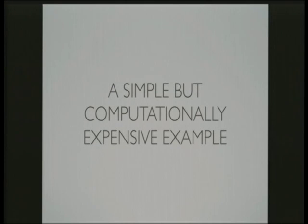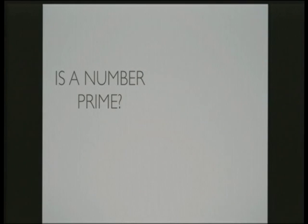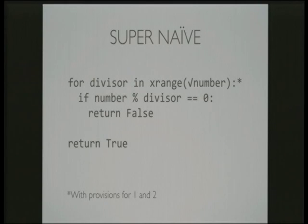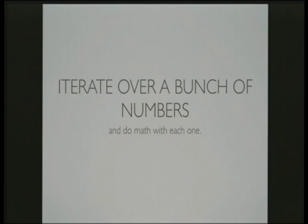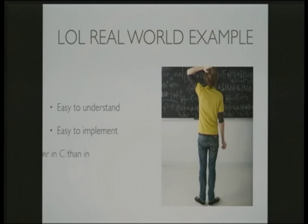For the demo I needed a simple but computationally expensive example, and I've gone with the classic: figuring out if a number is prime or not. I've chosen a super naive approach. The algorithm takes a number and for every divisor up to the square root of that number, checks if the number is evenly divisible by the divisor. If it is, return false — it's not prime. If we get to the end of the loop, return true — it is prime. There are also provisions to handle 1 and 2 as special cases. I just need something that's easy to understand, easy to implement, and most importantly, runs faster in C than in Python.